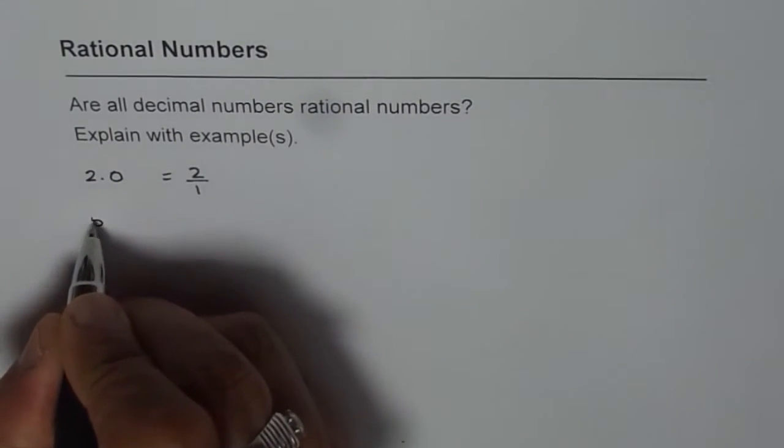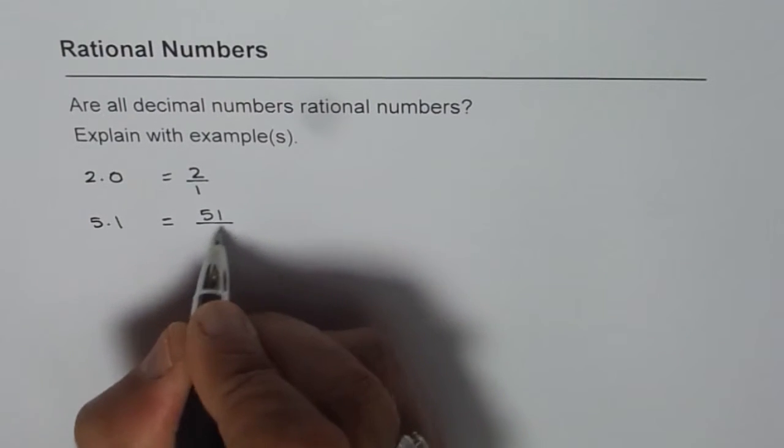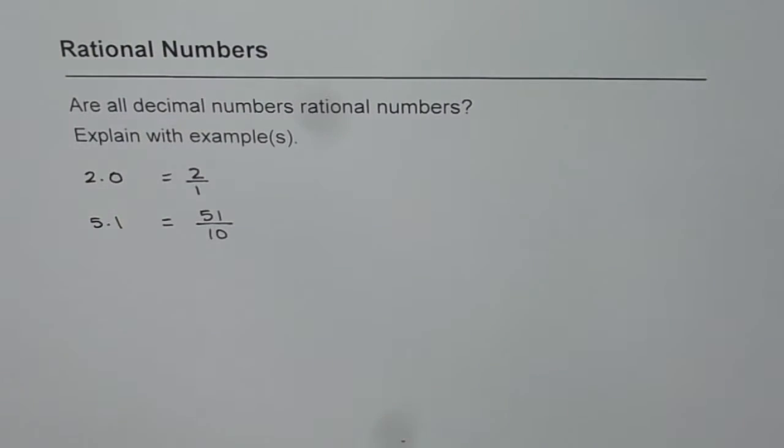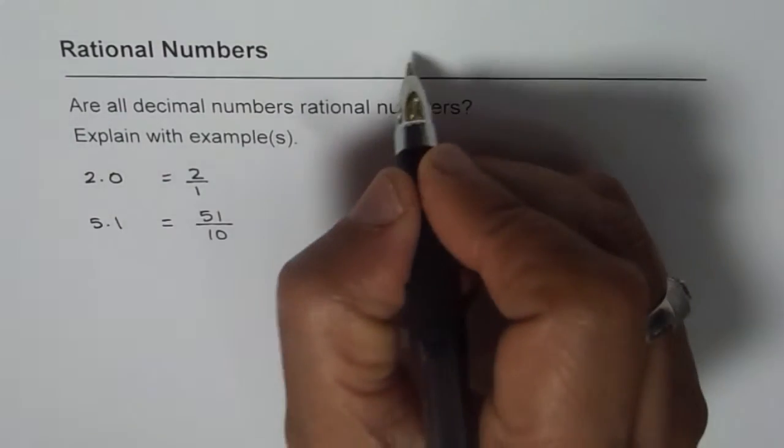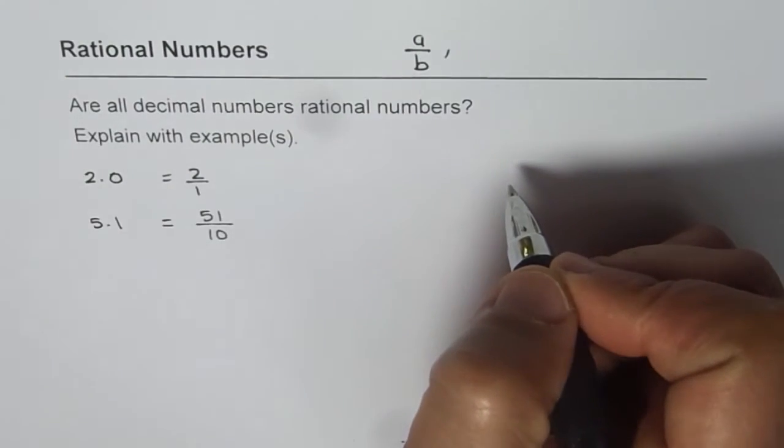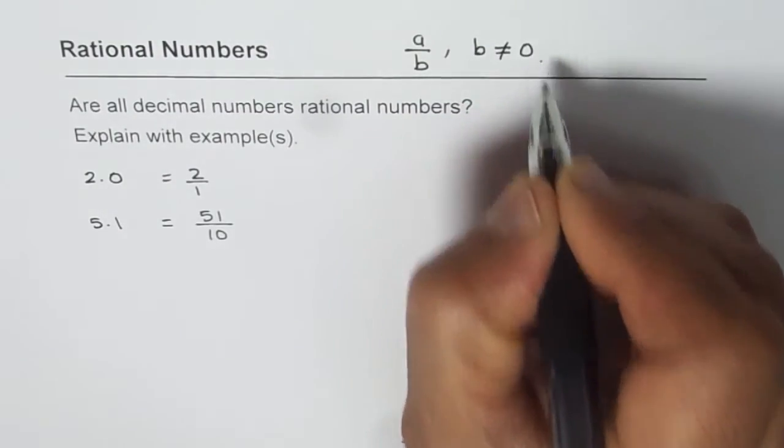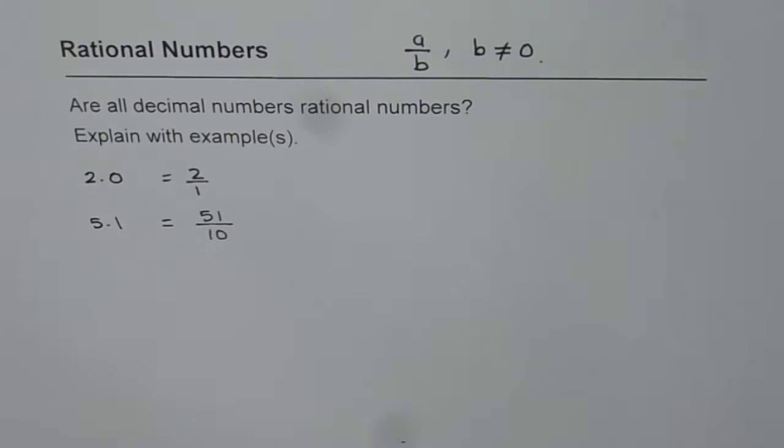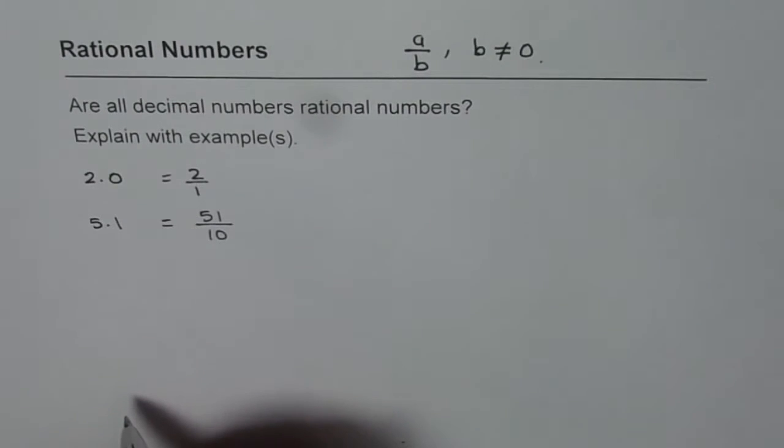If I write 5.1, I can write this also as 51 over 10. So that's the natural way of writing a rational number. Rational numbers, as you know, are numbers which can be written in the form of a over b, where a and b are integers, and b is not equal to 0. So that is a restriction. Now any decimal number like this can be written as a over b, where b is not 0.